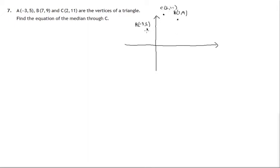So here we have our triangle A, B, C. The equation of the median through C would be the line from C to the midpoint, let's call it M, of the opposite side of the triangle. So M is the midpoint of A, B.